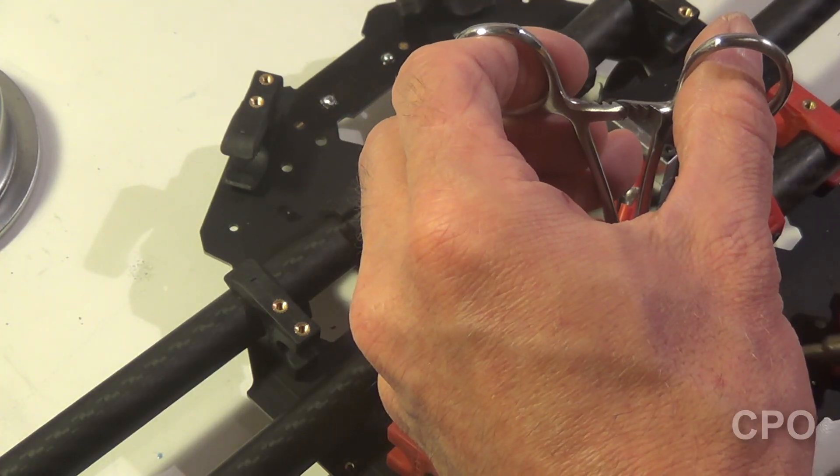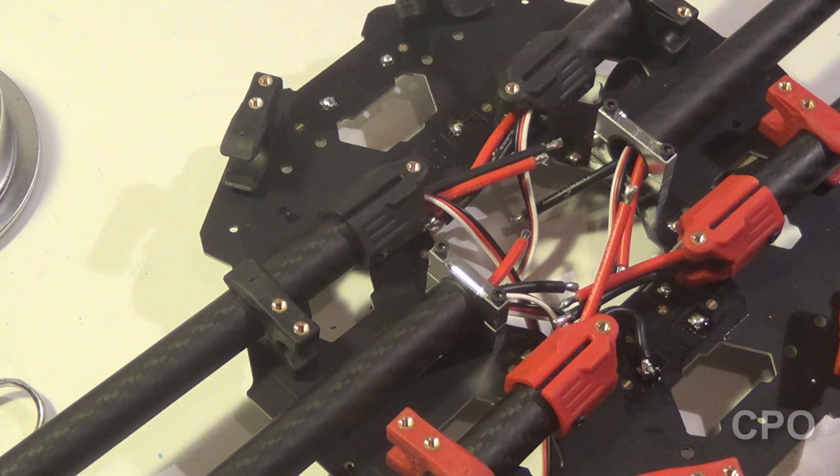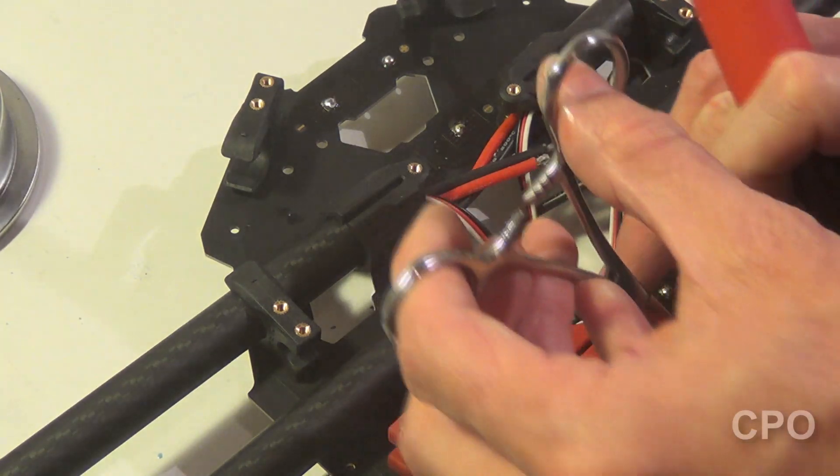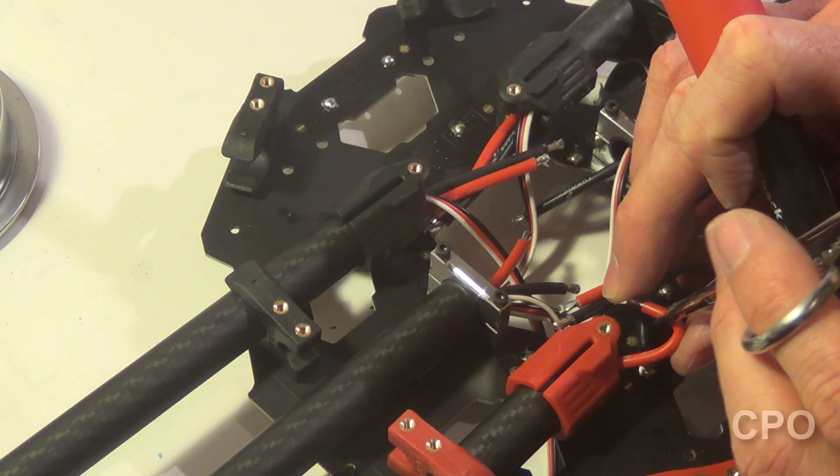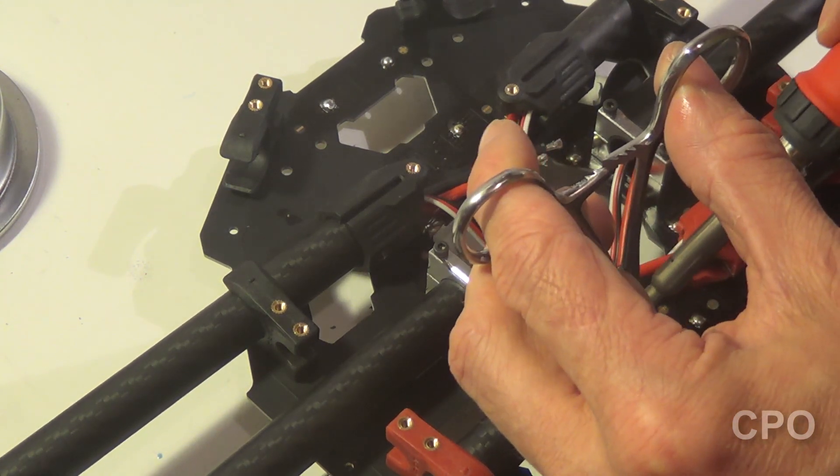I'm using these little, I don't know what these things are. These, what are they, forceps? I'm not sure. But they're medical scissors, whatever they are, to hold the wire. Works out great. I'm not locking them in, but I just wanted something really tiny that I could get in there and hold while I solder.